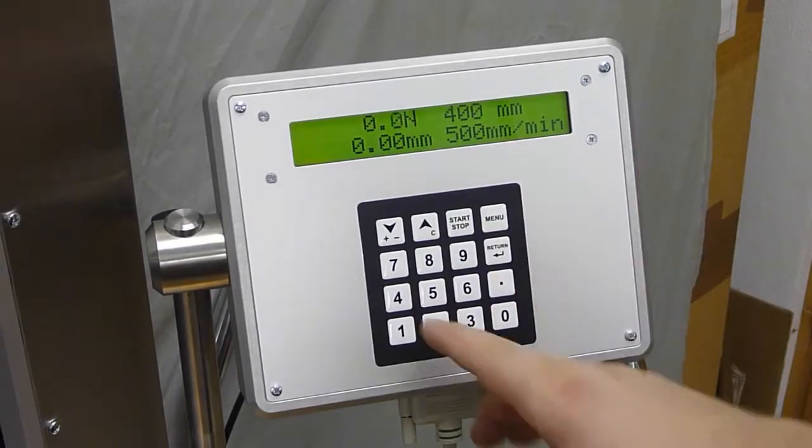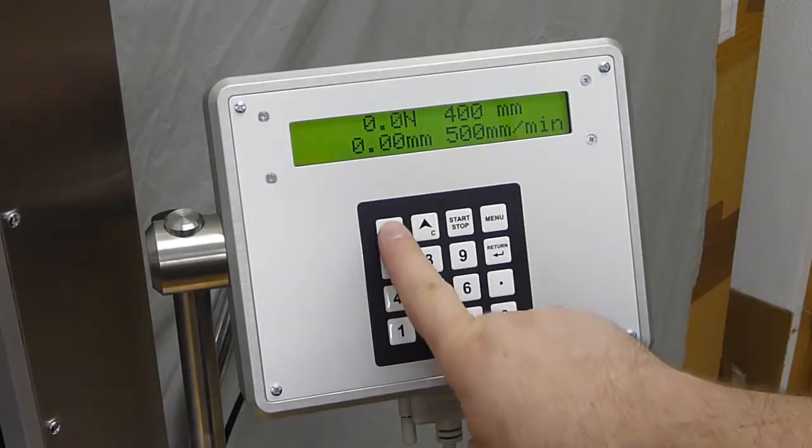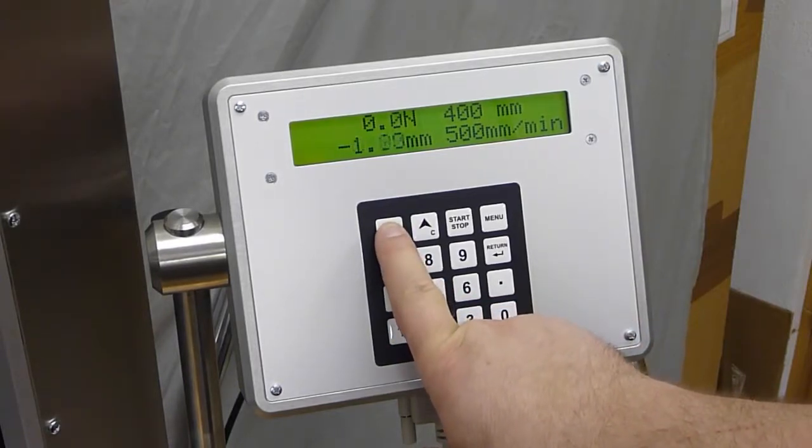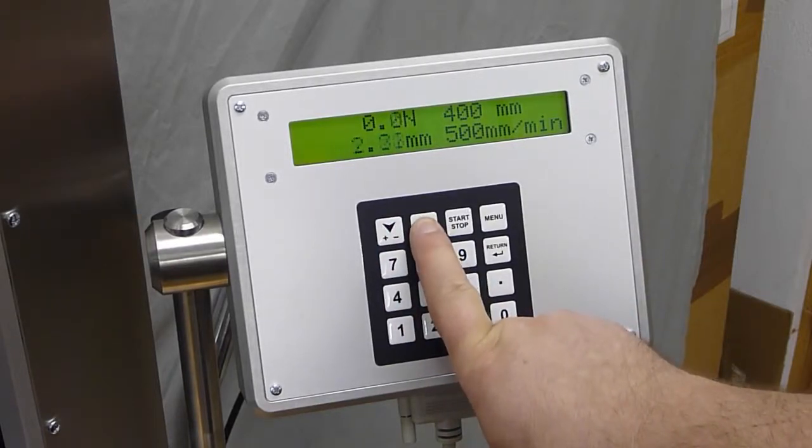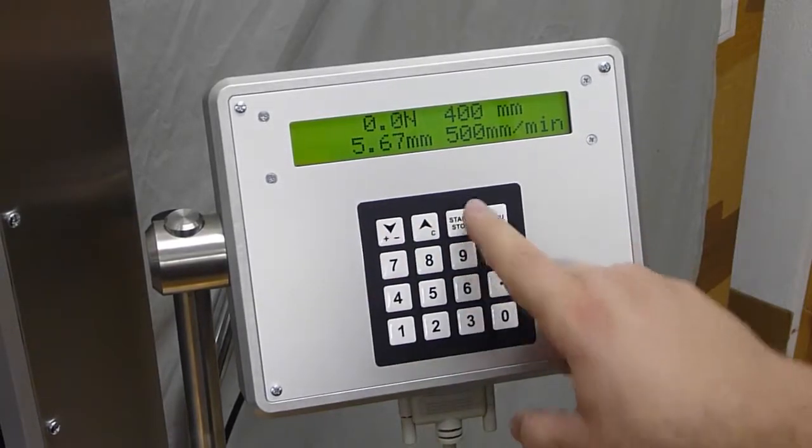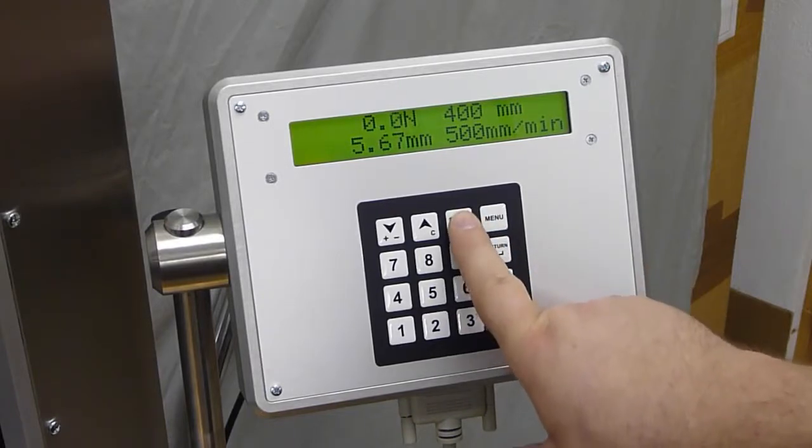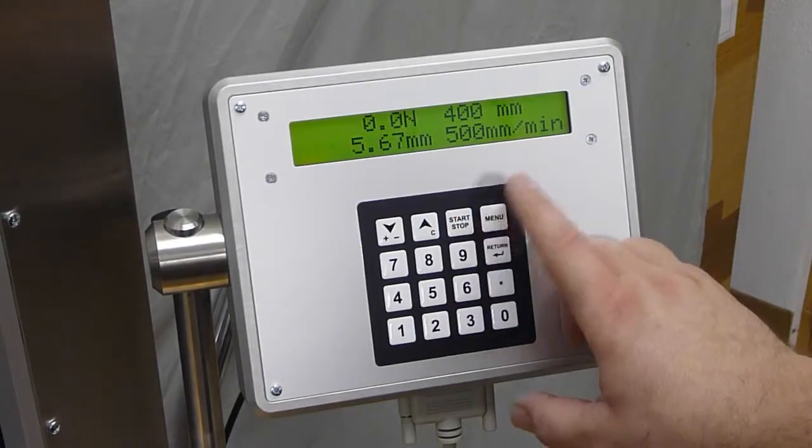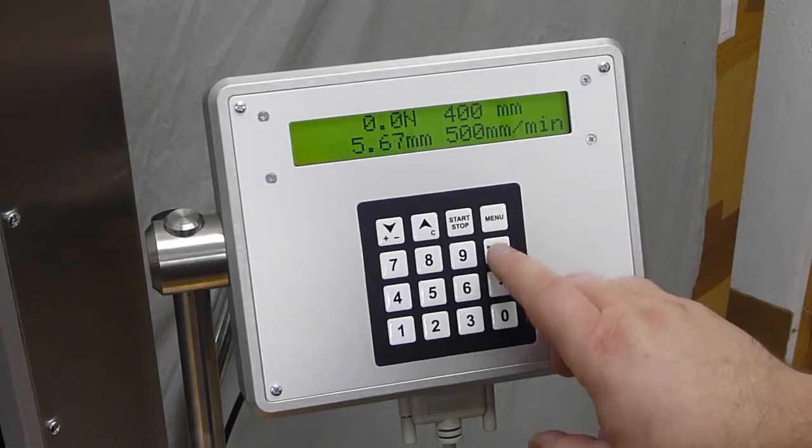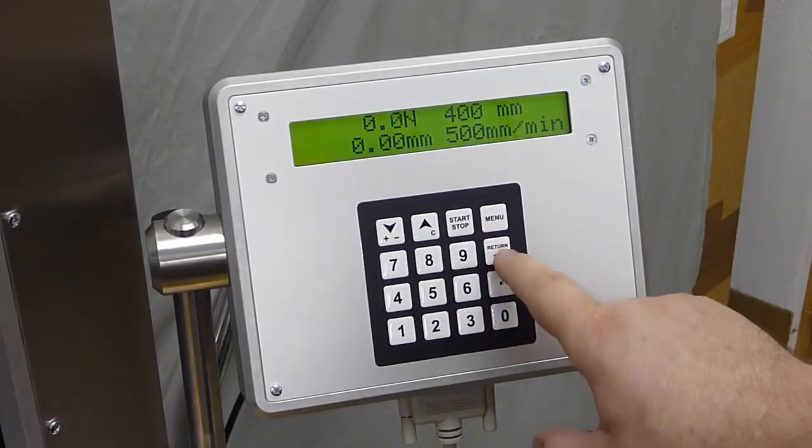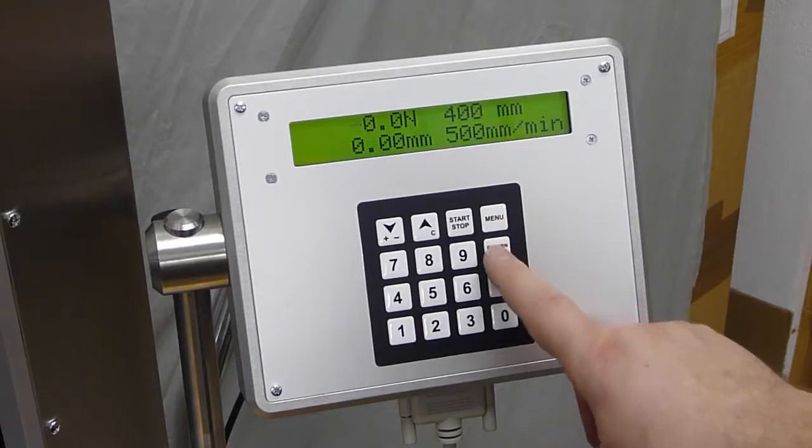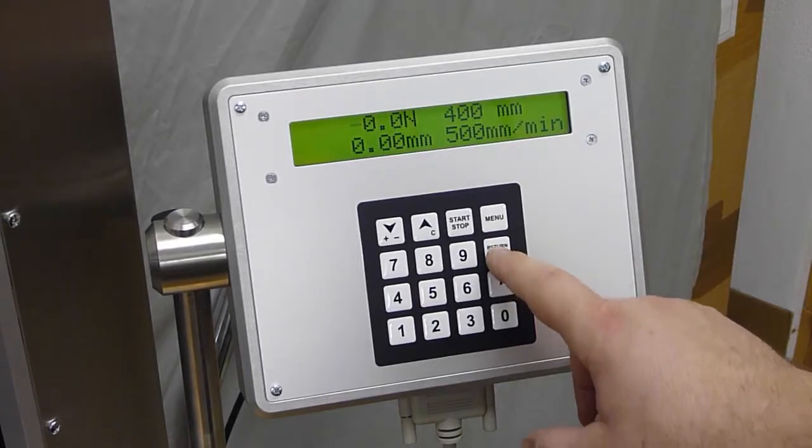The shortcut keys: down key to manually move down the machine, up key to manually move up the machine, start-stop to start and stop test, menu for user menu, return always sends the machine to zero position. In the test, the return key has two functions: break test and send the machine automatically to start position.